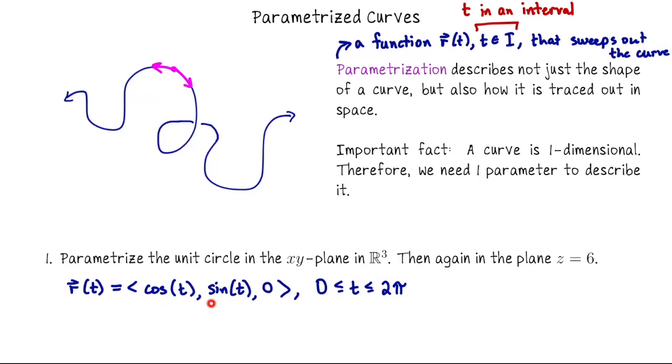That's the most basic way to parametrize the unit circle. So here x and y are going to give us the circular shape, and z must be zero the entire time because we're in the xy-plane. So if I wanted to parametrize the same circle but in the plane z equals 6, I'm just going to adjust that third component. This is our first question. Our second question.